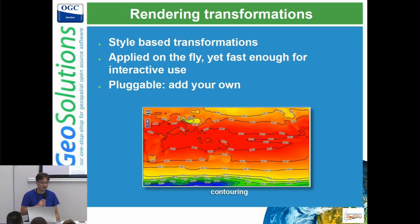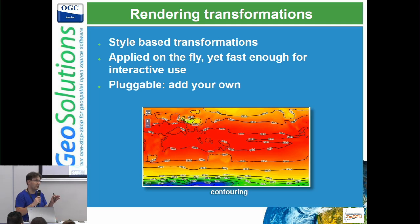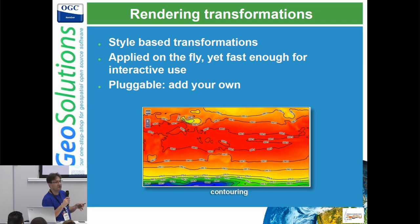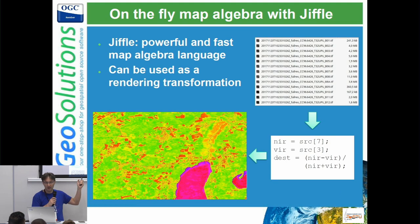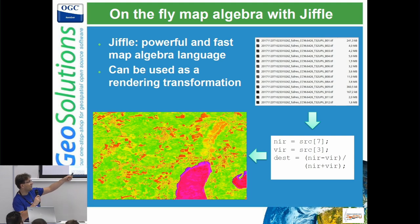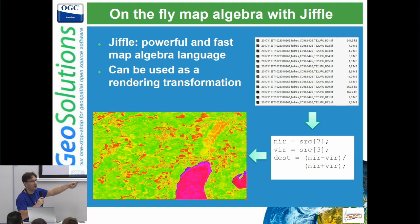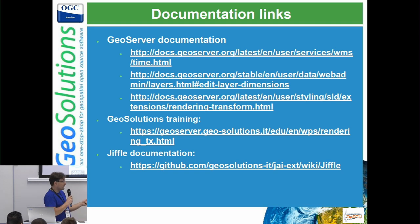We have rendering transformations, which are very useful. They let you run a quick process on top of your data to transform it on the fly — like on-the-fly isoline extraction, generation of wind barbs from NetCDF files with U and V wind components, or taking a multiband raster and calculating the NDVI index on the fly, then rendering the result as a map without ever storing the NDVI anywhere on disk. Documentation links are available for further reading.